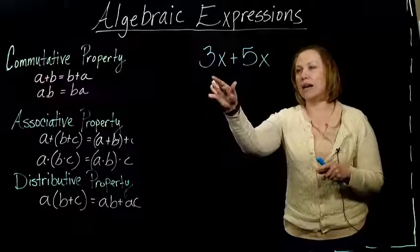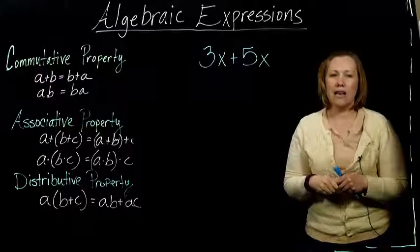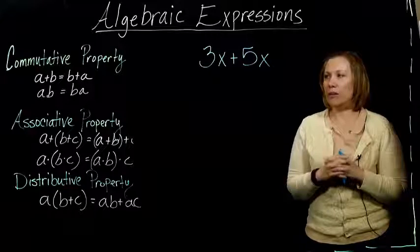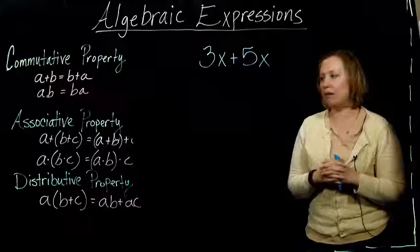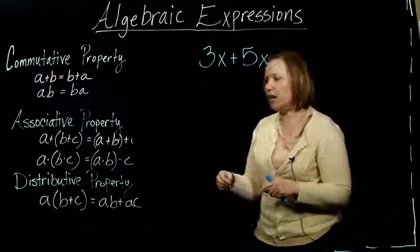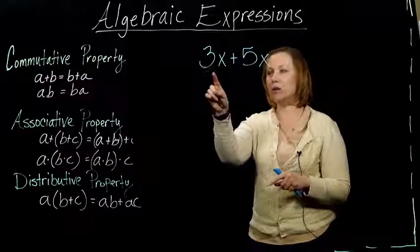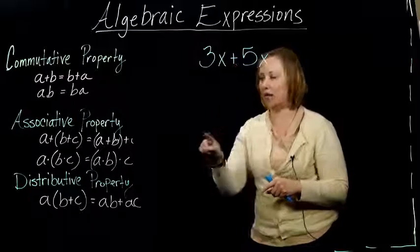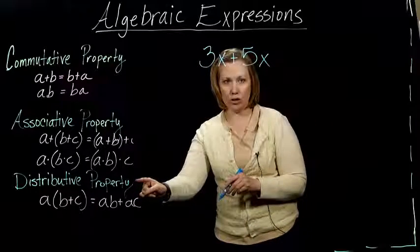I've got an example here: 3x plus 5x, and I want to make it a little bit nicer. There's a couple ways you can think about this. If we're using these properties, we've got multiplication and addition together, so I'm looking at this distributive property.